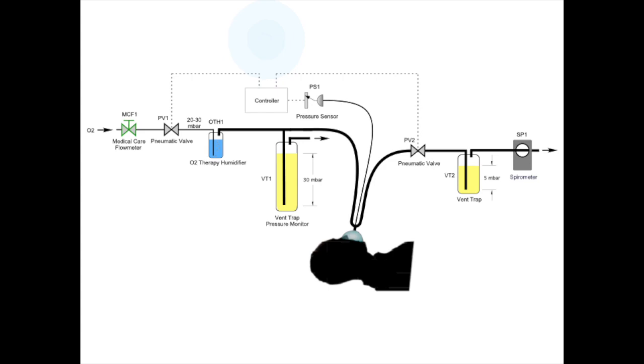The respiratory cycle is operated by actuating pneumatic valves PV1 and PV2. During the inspiratory phase, PV2 is closed and PV1 is open. At the end of the inspiratory cycle, the pressure reaches the design range of 20 to 30 mbar. At the end of the inspiratory cycle, PV1 is closed and PV2 is opened at the same time, allowing the discharge of the lungs' pressure. The end expiratory pressure is set by the height of the olive oil column in the vent trap VT1.